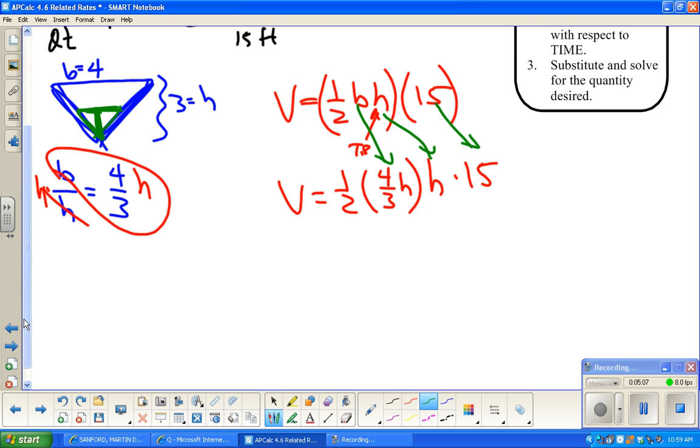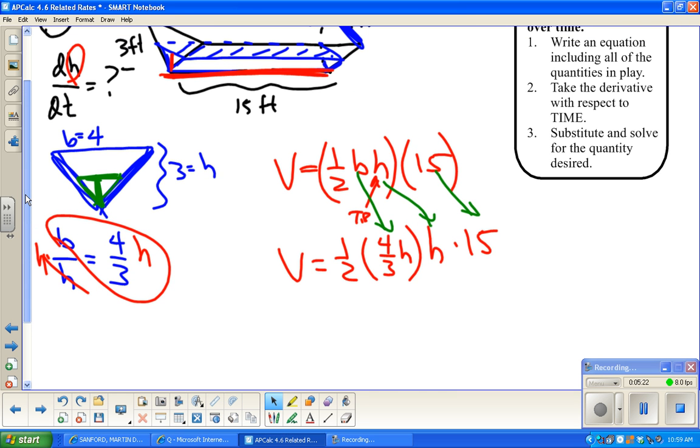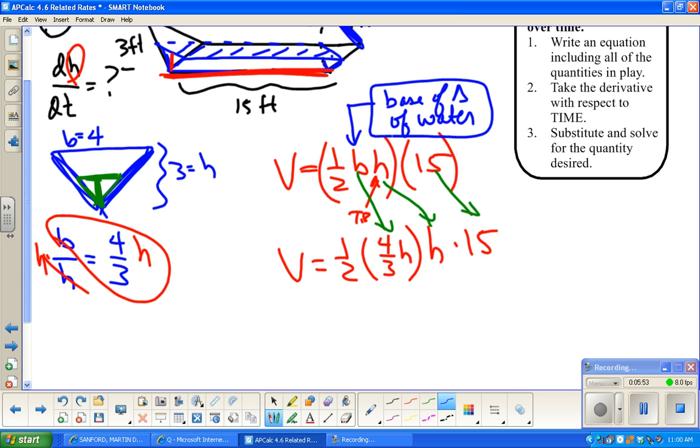Okay, and then we're just going to clean this up. Well again, the ratio of base to height is four-thirds H. So I solved this for B. I solved it for B so I could replace the B. So again, this base is not the base of the entire tank. This is the base of the triangle of the water. Not the entire tank, because remember, the volume of water that we have is not the entire tank, unless it's full.